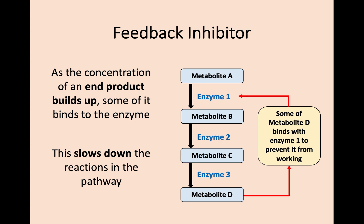Finally, we are going to talk about feedback inhibition. In feedback inhibition, the metabolic pathway continues as discussed until a final product is produced — in this case, metabolite D. However, as this pathway keeps running and more of the final product is produced, it may get to a concentration where too much of metabolite D is being produced. If this is the case, some of this final product may be able to go back to the start of the pathway and inhibit enzyme 1, which will slow down the reactions in the pathway and therefore prevent a build-up of the final product.